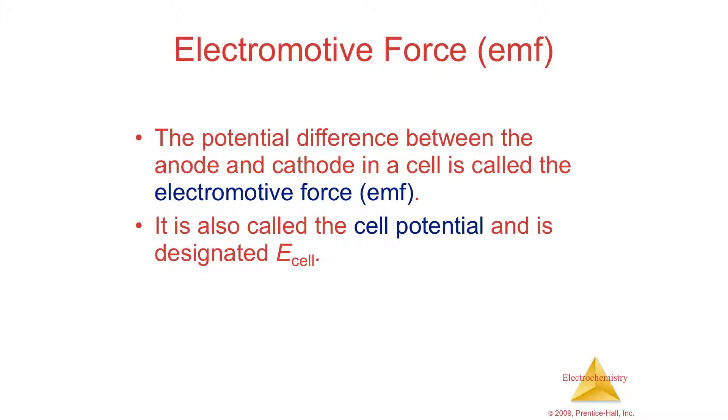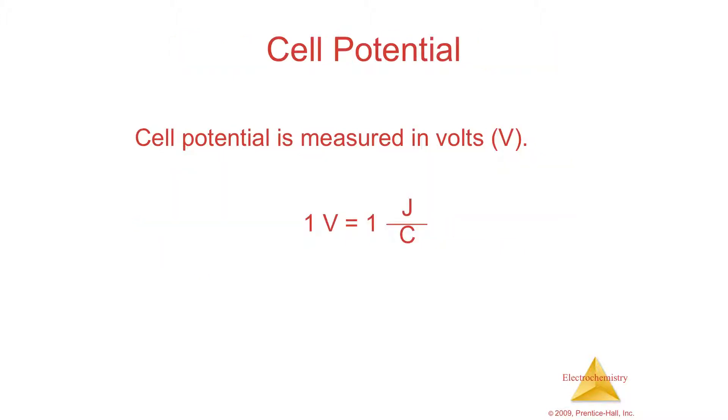It's also called the cell potential and we're going to see that it's measured in volts and that's why you would call a battery a voltaic cell because it's running on the push of those electrons through the wire and that push is based upon the differences between the metals that you put in the solutions. It's called a voltaic cell because it's measured in volts.